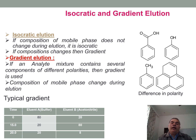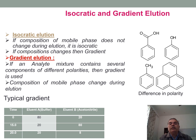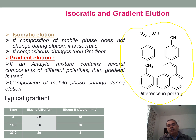In isocratic elution, the composition of the mobile phase is not changed throughout the analysis. In gradient mode, the composition of the mobile phase changes with time. When there is a large difference in polarity among molecules, gradient elution is used. For example, a sample mixture containing benzoic acid (highly polar), phenol (polar), toluene (non-polar), and anthracene (non-polar) cannot be eluted in isocratic mode but can be eluted in gradient mode.